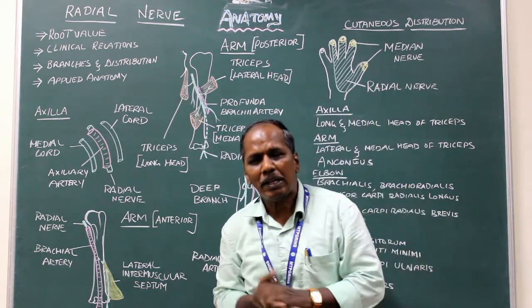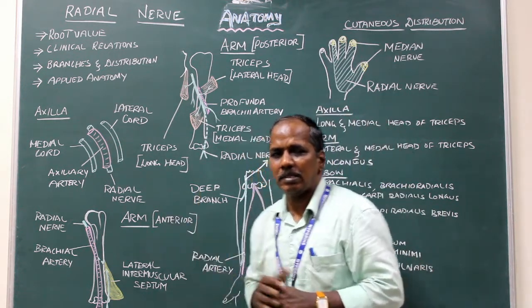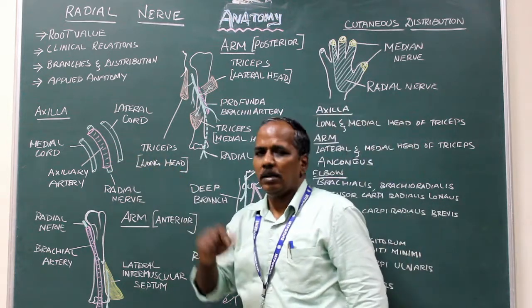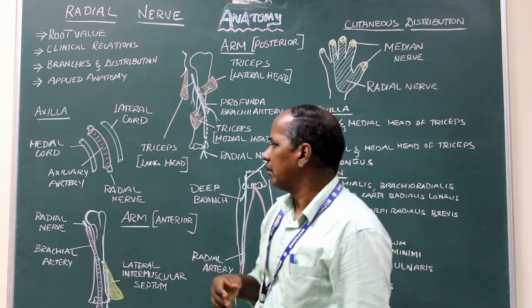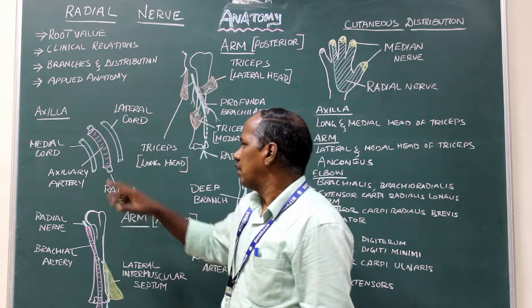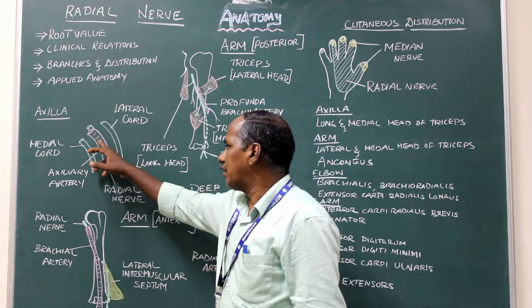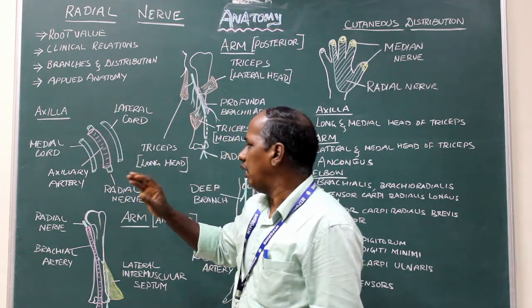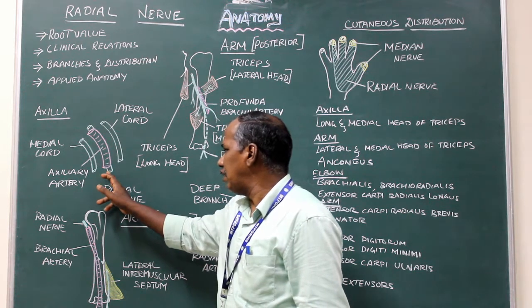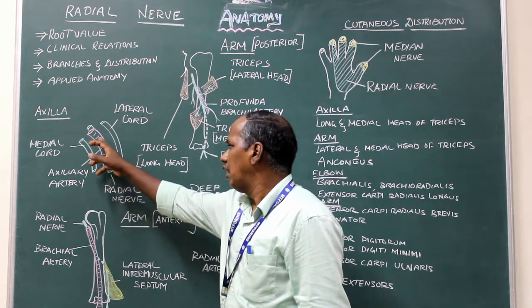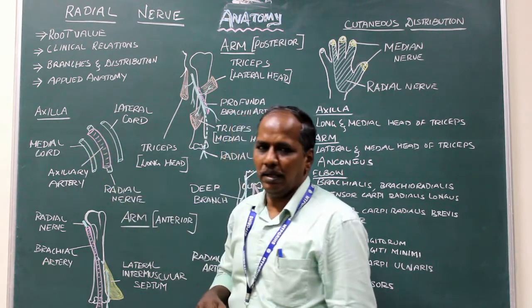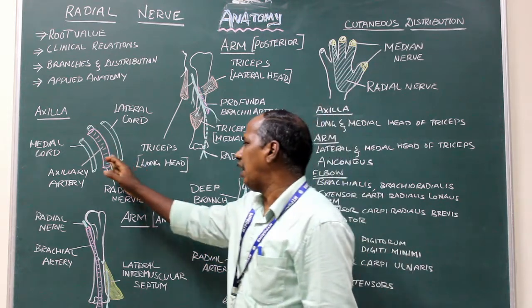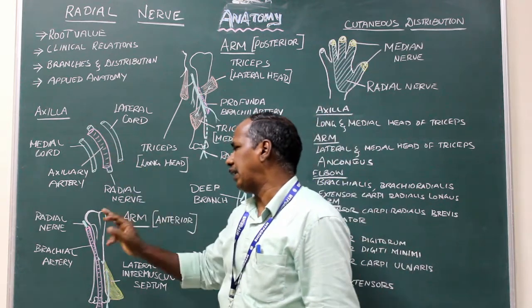Important clinical relations in the axilla: the radial nerve lies posterior to the third part of the axillary artery.